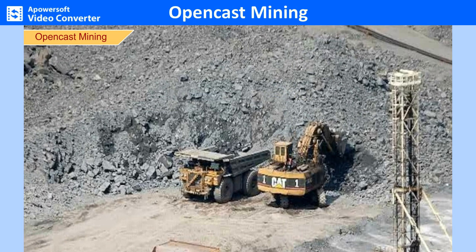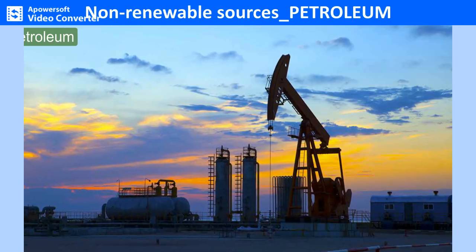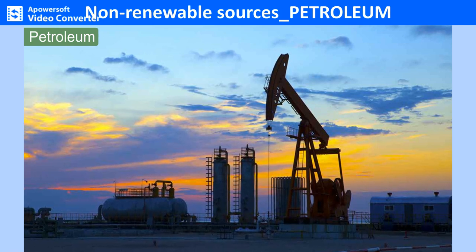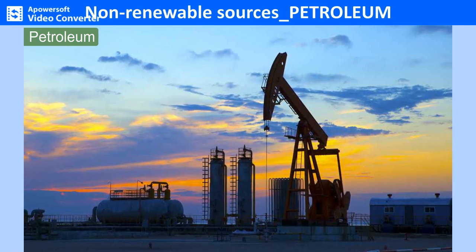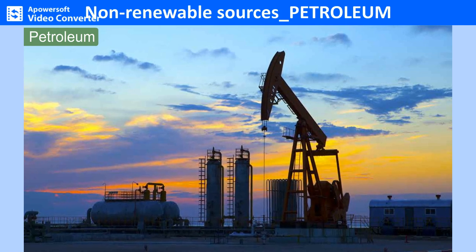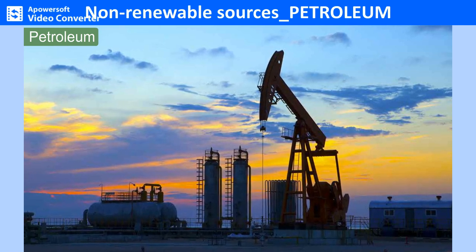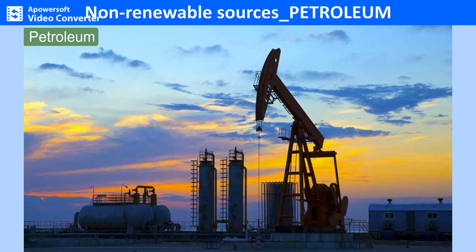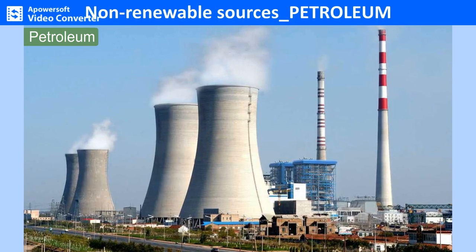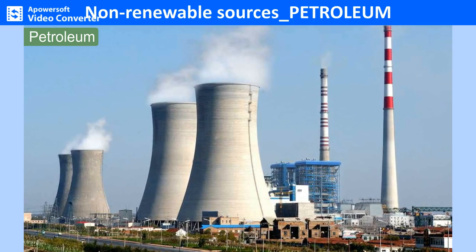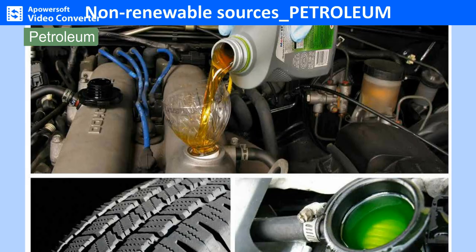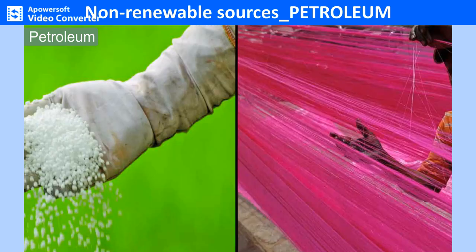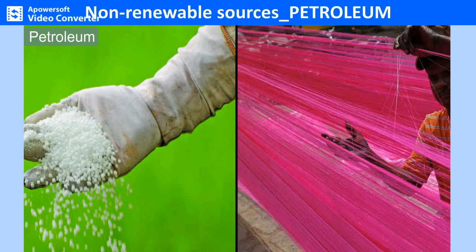Petroleum, also referred to as black gold or liquid gold, is the most important source of energy in the world at present. It provides fuel for heating and lighting and generates thermal power. It is used as a lubricant for machinery and provides raw material for a number of industries such as petrochemicals, synthetic fibers and fertilizers. It has a wide range of domestic uses such as cooking and heating, and provides motor power for vehicles.